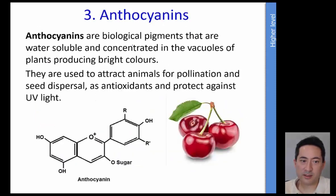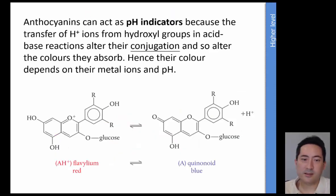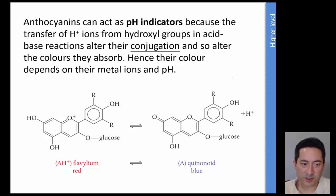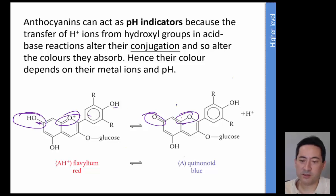The last one is anthocyanins - they're just pigments for attraction, seed dispersal, antioxidants, and protection against UV light. You can see there's always lots of conjugation: double bonds, benzene rings, and sometimes transition metals. Lastly, as part of the syllabus - how do they change color and why are they used as color indicators? The conjugation is altered by pH. pH change causes the hydrogens to come off, and there's a change in the conjugation - this one is added here, and this one is removed here. So conjugation changes cause color changes, which is what you need to know.